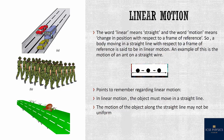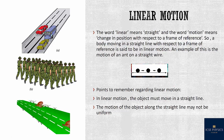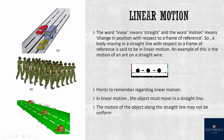An example of this is the motion of an ant on a straight wire, as you can see in this figure. Two points regarding linear motion: first, the object must move in a straight line. Second, the motion of the object along the straight line may not be uniform.